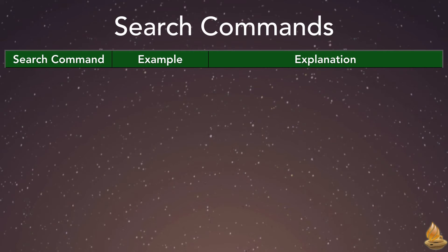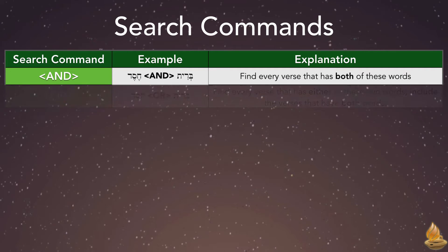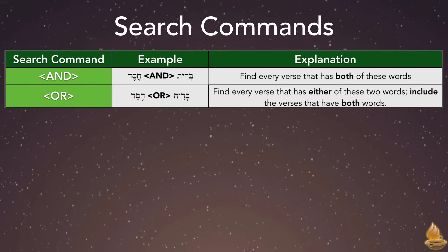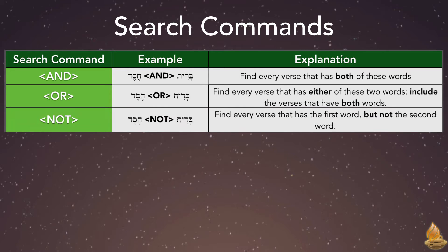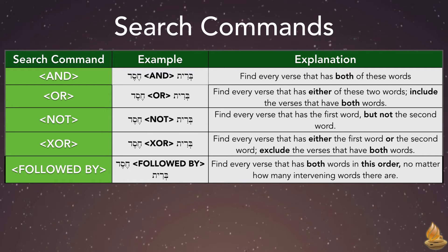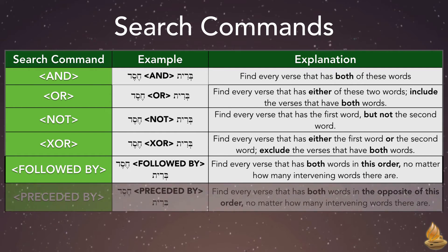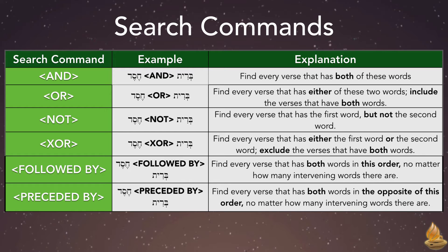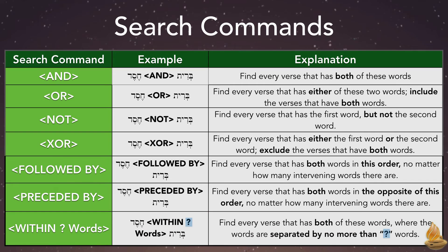We can also use Accordance with seven different connecting commands in our Hebrew searches. They allow for considerably more precision, whether we're searching for roots, lexemes, or inflected forms. AND finds every verse that has both of these words. OR looks for every verse that has either of these two words, including verses that have both. NOT finds every verse that has the first word but not the second. EXOR finds every verse that has either the first or second word, but excludes verses that have both. Followed By finds every verse with both words in this order, no matter how many intervening words there are. Preceded By finds every verse with both words in the opposite order. And Within finds every verse with both words separated by no more than a specified number of words.